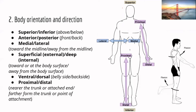Now we're going to introduce a set of terms that describe body orientation and direction. We'll use them to describe anatomical relationships between structures. The first set is superior and inferior. Superior means above and inferior means below. For example, the head is superior to the neck because it's above the neck, and the neck is inferior to the head.